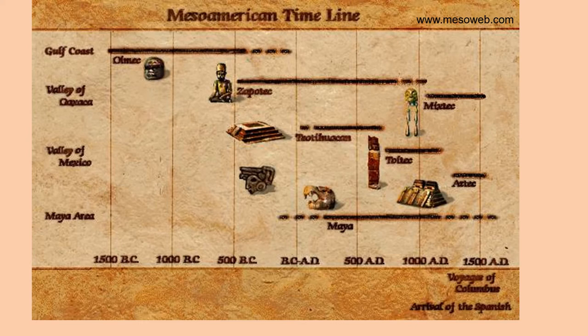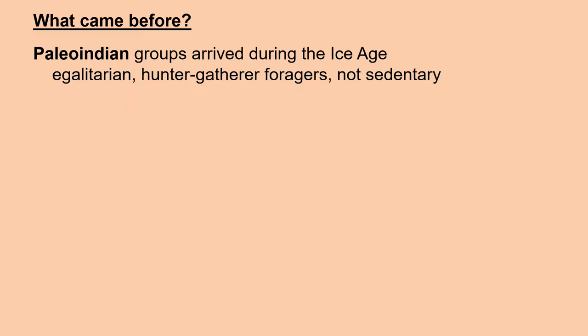In this Mesoamerican timeline, you can see that Olmec was by far the earliest civilization, followed by Zapotec, which I will not be talking about, and then Teotihuacan and the Mayan, ending with the Aztec.